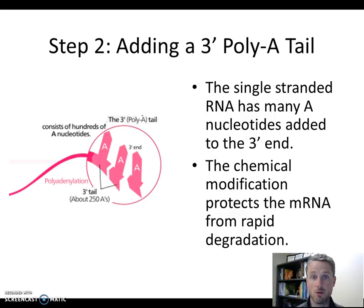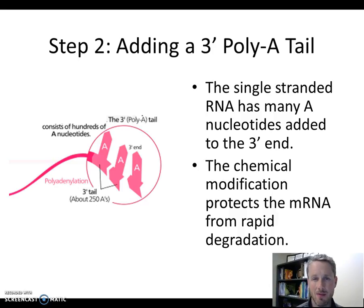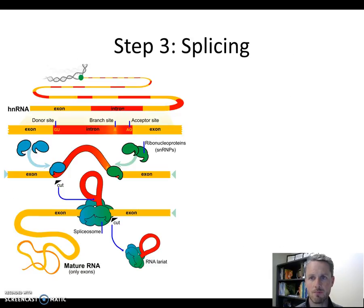So we've done two steps — we added the cap and we added the tail. Now we move to the third step, which might be the most complicated: something we call splicing.